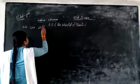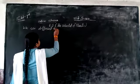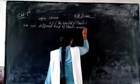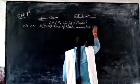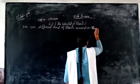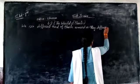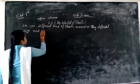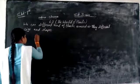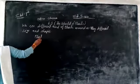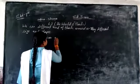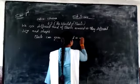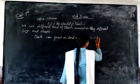We see different kinds of plants around us. They have different sizes and shapes. Plants can grow on land as well as in water.